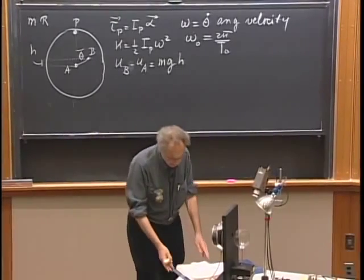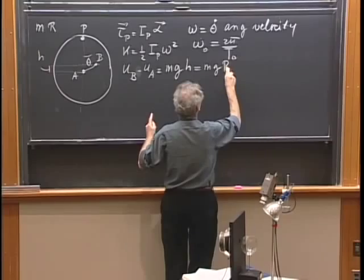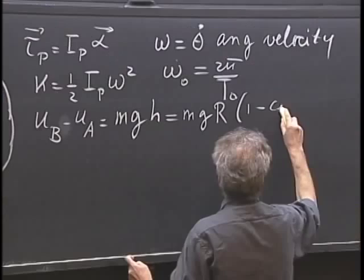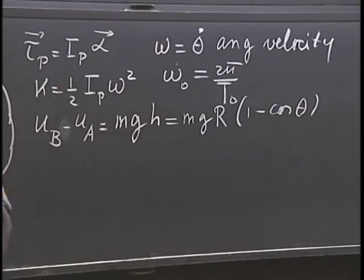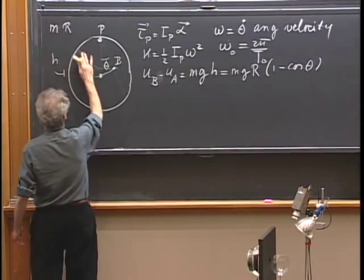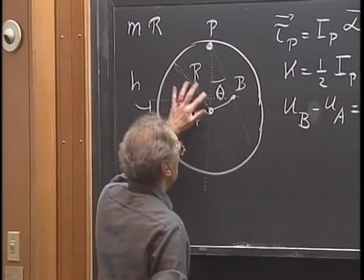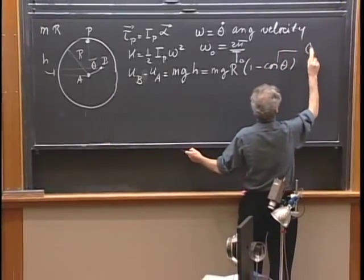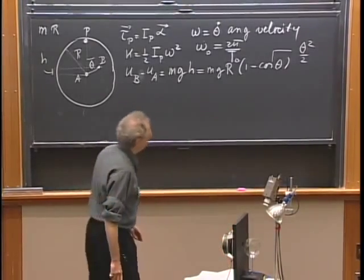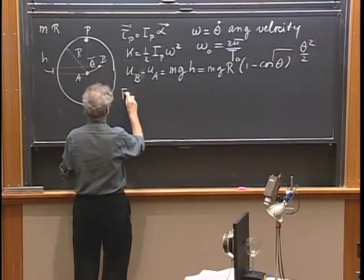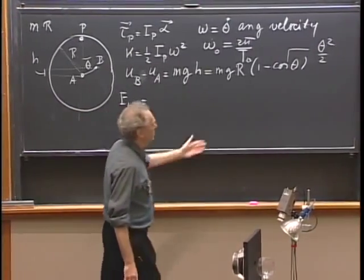MGH — Massachusetts General Hospital, that's the way to remember it. H is very easy: H is the same as R times (1 minus the cosine of theta). R is the radius of this circle. Now, for small angles, the cosine of theta is 1 minus theta squared divided by 2, so I can rewrite this: the total energy E total becomes one-half I_P times theta dot squared, plus MGR times theta squared over 2.